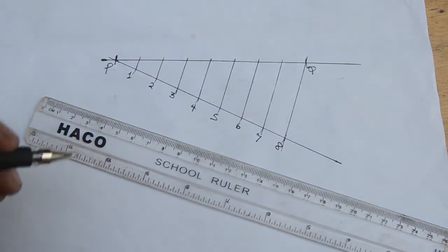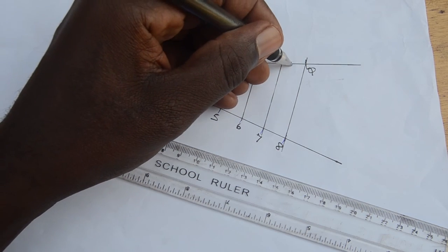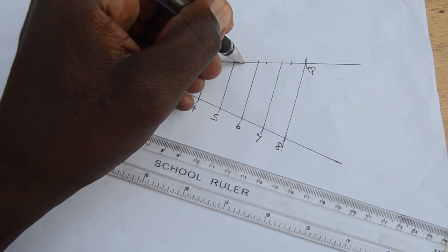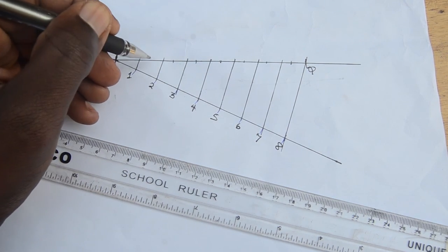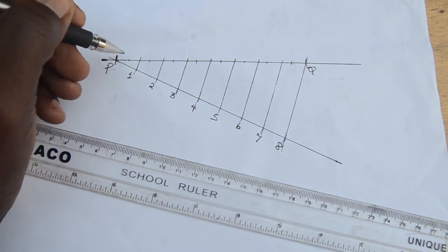By doing this you would have divided the line PQ into eight equal parts. Thank you for watching.